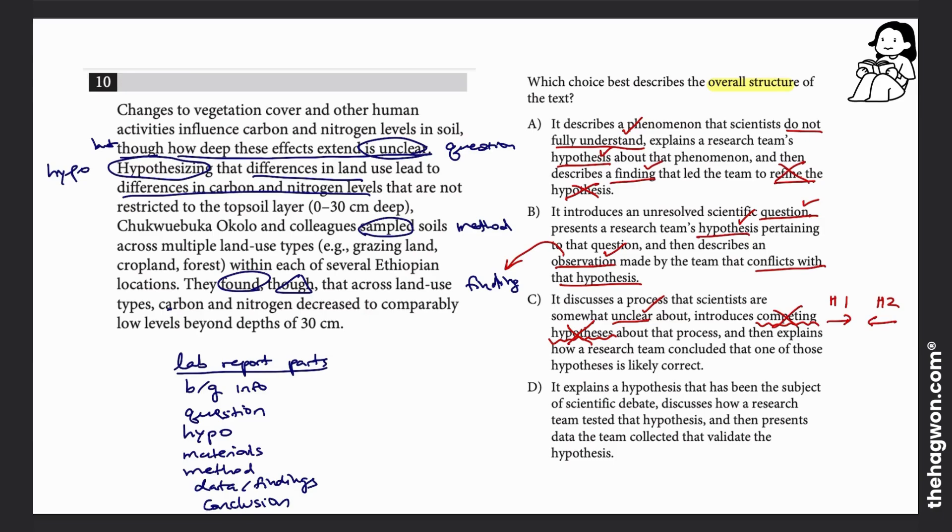Answer choice D says it explains a hypothesis that has been the subject of scientific debate. Notice how answer choice C where it says competing hypotheses and hypothesis of debate—notice how C and D are both giving you the same kind of sentiment or the same idea. For that reason, both of those answer choices are incorrect for the same reason. So make sure when you pick up on these patterns, you'll be able to solve these questions a lot more efficiently.